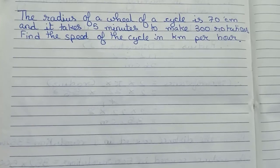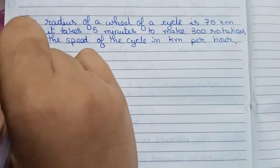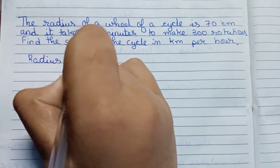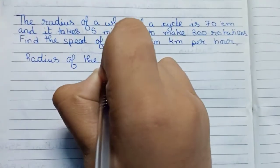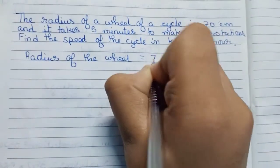So let's start. First we write: radius of the wheel equals to 70 centimeters.